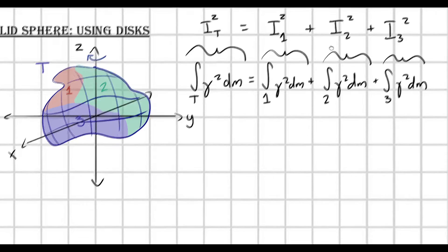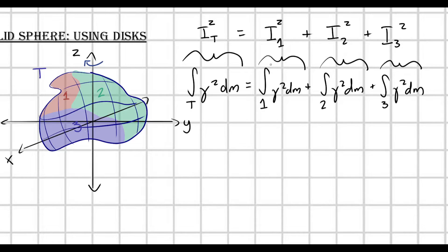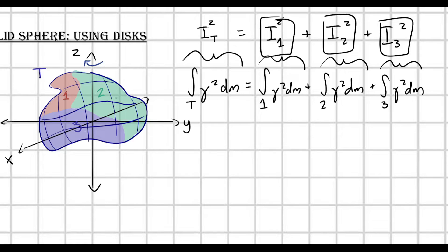And so we've hit on a very important property about moments of inertia. If I have multiple objects — or even the same object broken into a collection of smaller objects — and all of these objects are rotating about the same axis of rotation, then I can calculate the moment of inertia of each of these little subdivisions, add them together, and that gives me the moment of inertia of my total object.